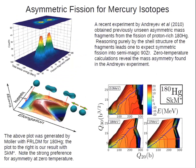Moving on to another example: the mercury isotopes, where a simple shell-structure argument would say that zirconium-90 is semi-magic, and since it's half of mercury-180, it should be the most likely fragment. But that naive argument didn't work out in experiments. Once experiments were performed at a low enough energy, they could see very clearly that asymmetric fission was happening. A macroscopic-microscopic model generated by Möller shows a pretty clear preference for the asymmetric pathway, and my own calculations with SKM* at zero temperature also show a very clear preference for the asymmetric pathway with a much higher barrier against symmetric fission.